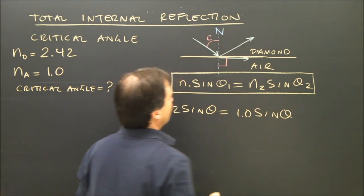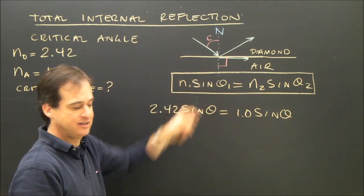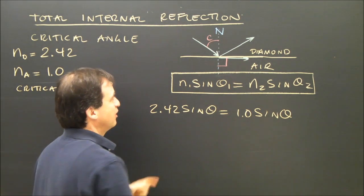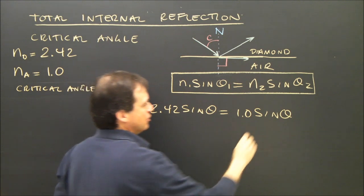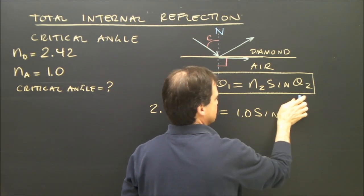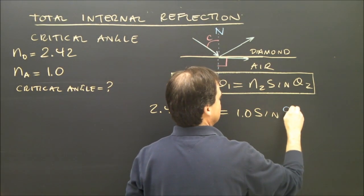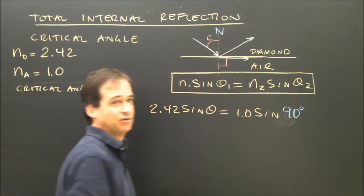Sine of the angle in air. And I said, in order to find the critical angle, you've got to assume the angle in the other material is now at 90 degrees. So I need to take this and replace it with 90 degrees.